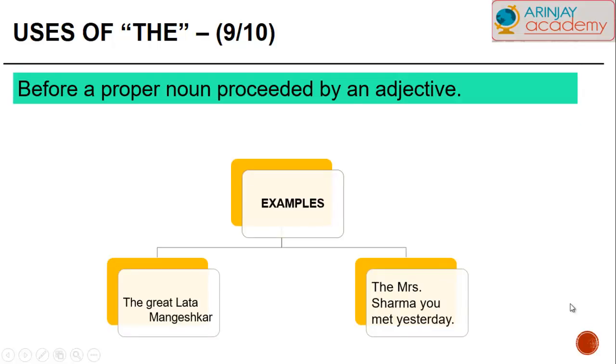Before a proper noun preceded by an adjective. The great Lata Mangeshkar. Lata Mangeshkar here is a noun and great is an adjective. But we use THE when it precedes an adjective. The Mrs. Sharma you met yesterday.